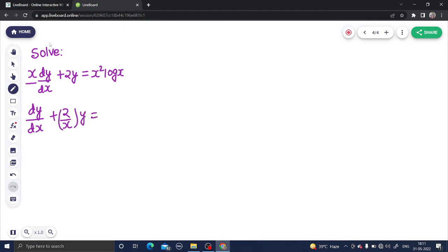And here if you divide by x you will get x·log(x). Now if you look at this carefully, this is your P, because this is of the form dy/dx plus a function of x times y equals to another function of x. So P here clearly is 2/x.